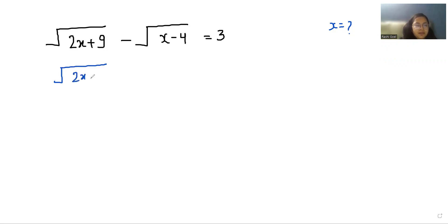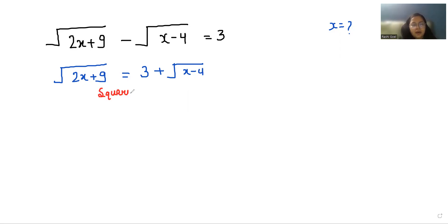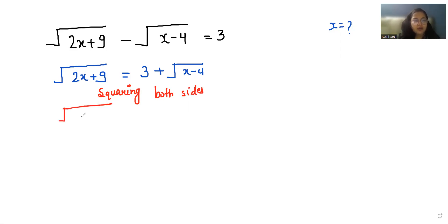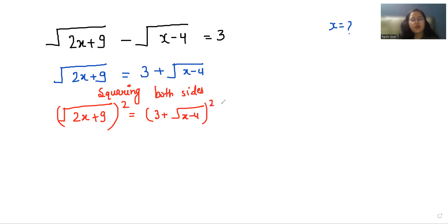We can write this as square root (2x + 9) equals 3 plus square root (x - 4). Now I'm doing squaring on both sides. We can write this as square root (2x + 9) whole square equals 3 plus square root (x - 4) whole square. With the help of this square, the square root eliminates.